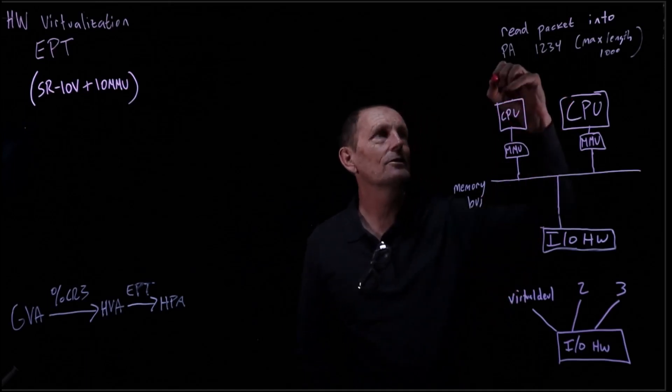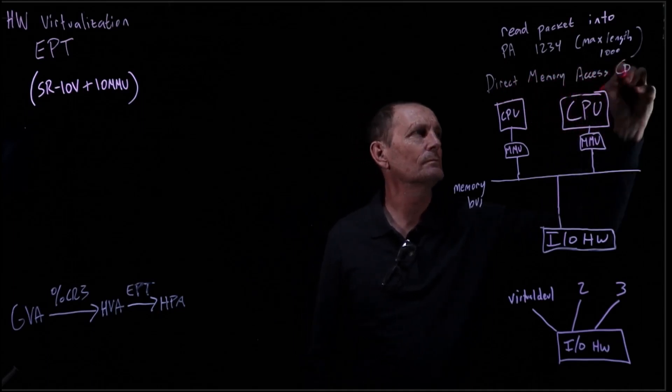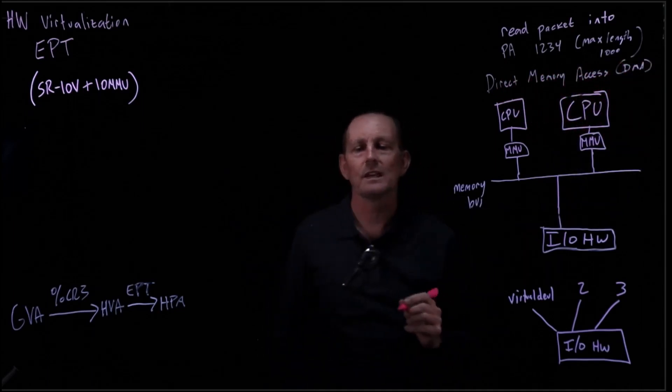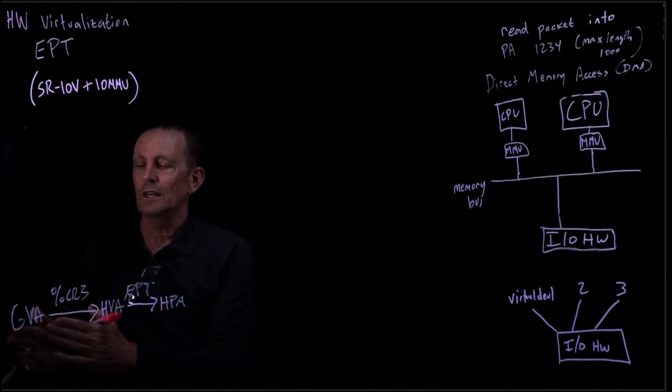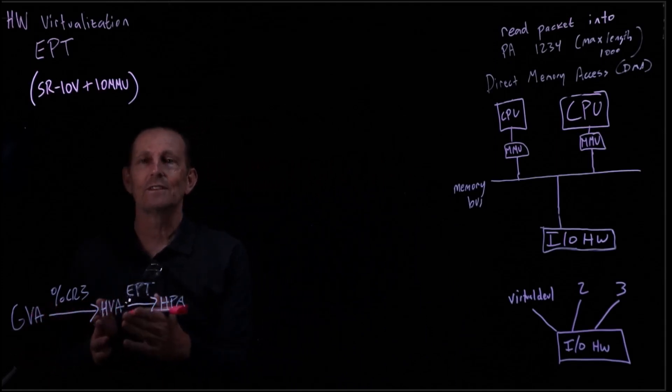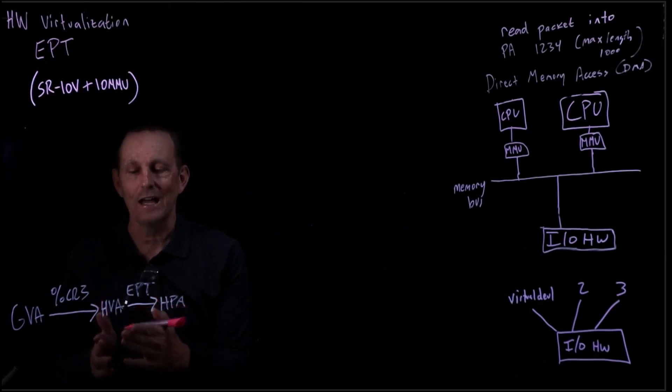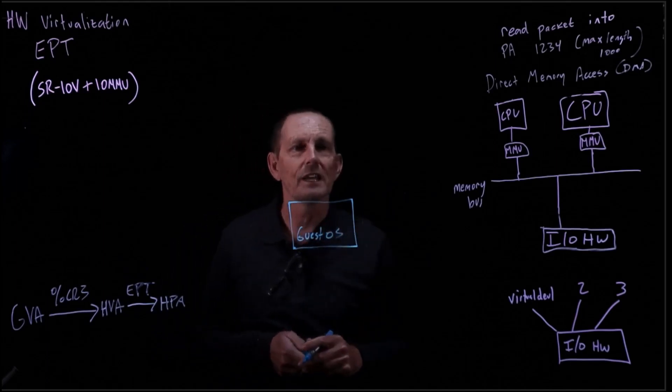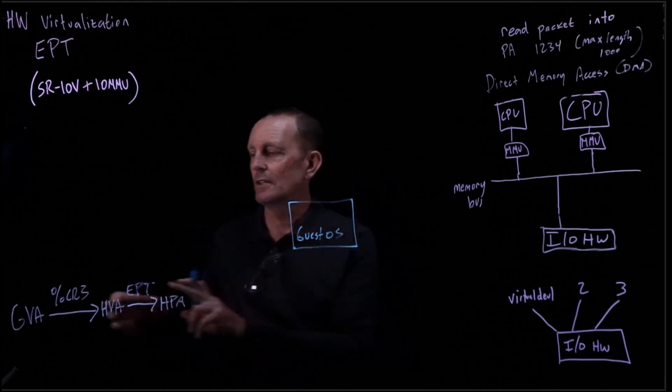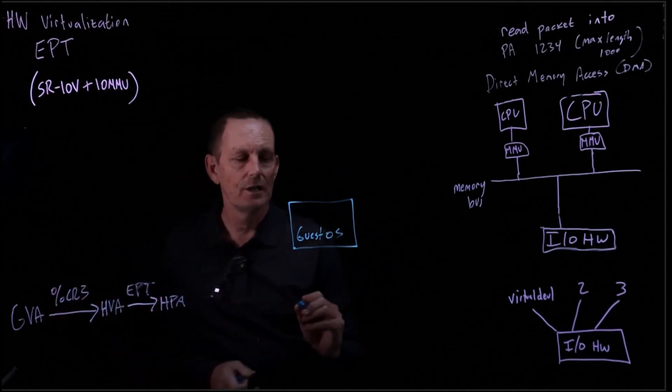So that all works great, and this is called DMA, direct memory access. The problem comes about when we have a guest OS running. A guest OS is running, a virtual machine is running, and what it thinks of as physical addresses are actually not true physical addresses, they're hardware virtual addresses.